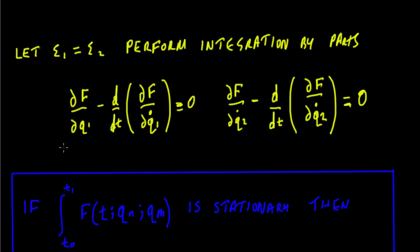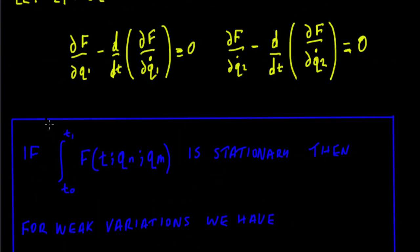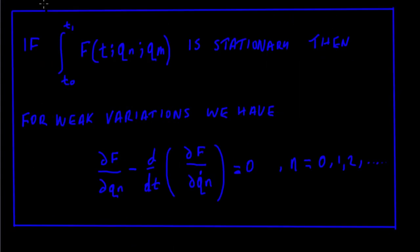So we're going to be left with Euler-Lagrange written out twice, one for each of the independent variables q1 and q2. In general, if we were to write out the functional in terms of a value qn to qm, and if it's stationary,